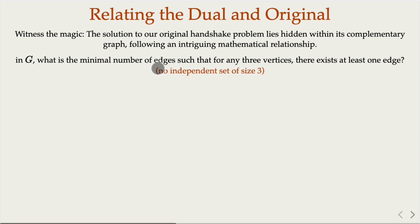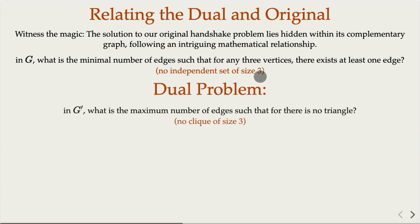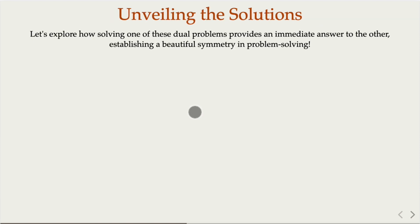The original problem: find the minimum number of edges such that there is no independent set of size 3. The dual problem is: in a graph G prime, what is the maximum number of edges such that there is no triangle — no clique of size 3? We try to solve the original problem, but the dual problem may be easier. So let's look at that dual problem.